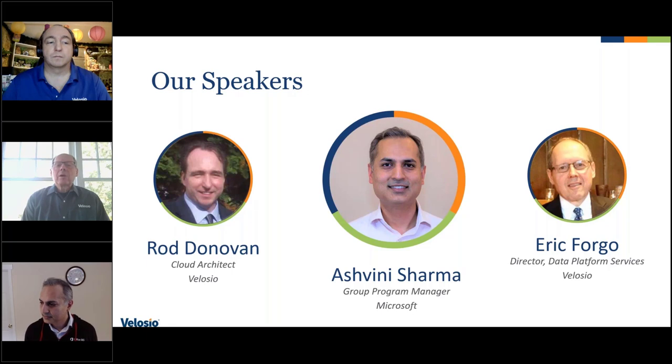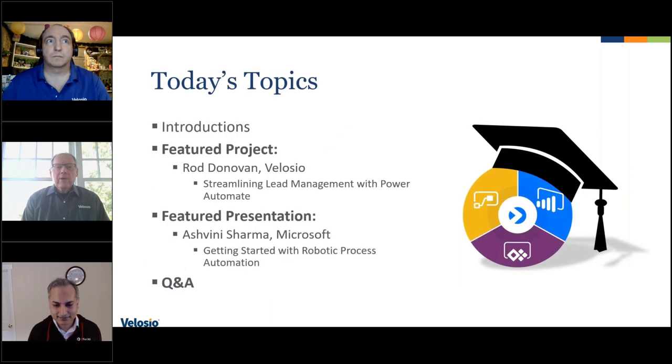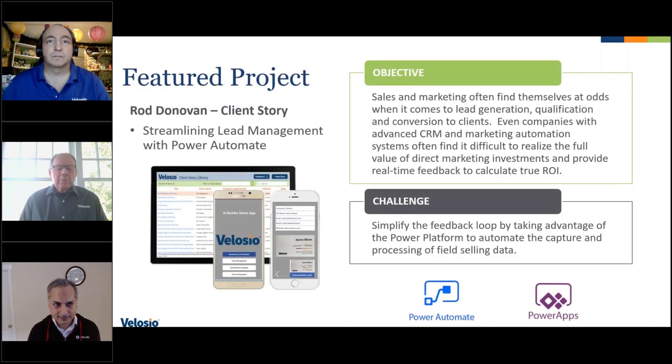Today we have a very exciting lineup of speakers. Rod Donovan, a cloud architect at Velocio, will be talking specifically about streamlining lead management with Power Automate — one example of how Power Automate can address a real-life scenario to improve organizational efficiency. We're also honored to have Ash Sharma from Microsoft, who will make a presentation on robotic process automation, one of the highly relevant tools in the Power Platform. I'll hand it over to Rod now to jump into his discussion around streamlining lead management.